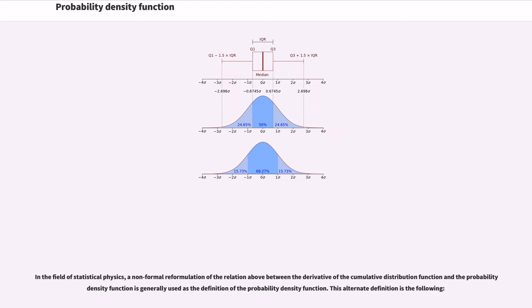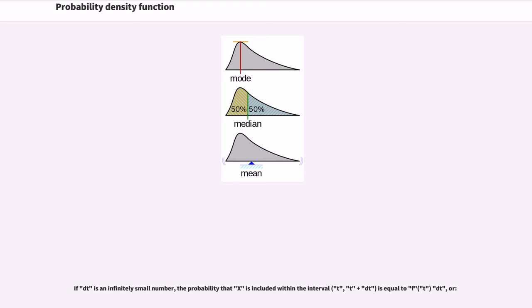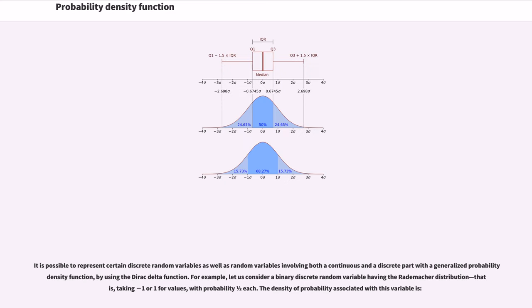In the field of statistical physics, a non-formal reformulation relates the derivative of the cumulative distribution function to the probability density function, and is generally used as the definition of the probability density function. This alternate definition is: if dt is an infinitely small number, the probability that X is included within the interval [t, t+dt] is equal to f(t)·dt.